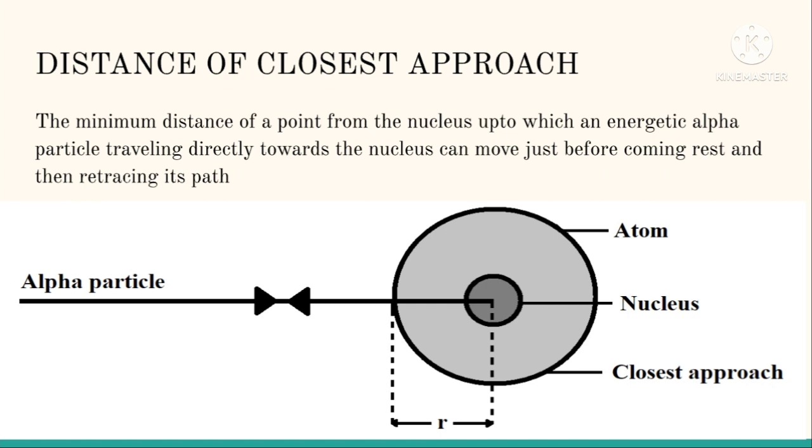Next important topic is distance of closest approach. This is called the minimum distance. The minimum distance of a point from the nucleus up to which an energetic alpha particle traveling directly towards the nucleus can move just before coming to rest and then retracing its path.